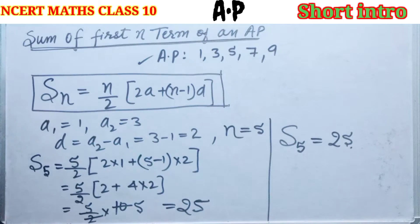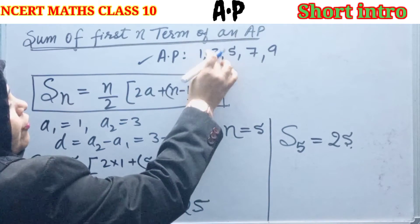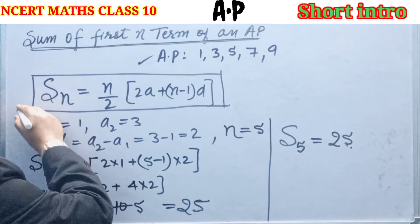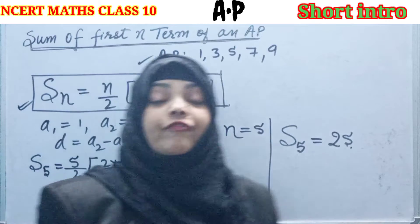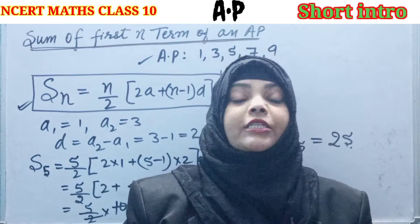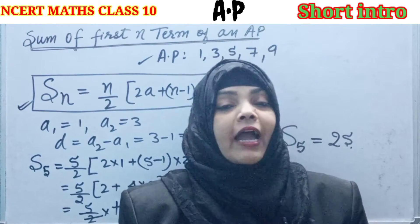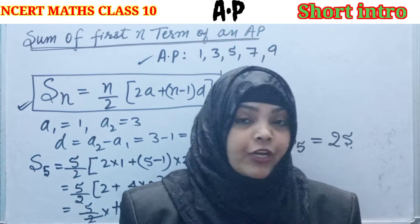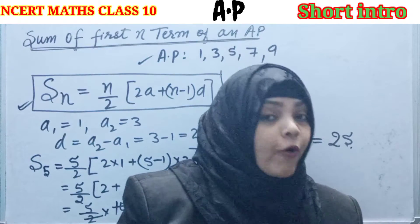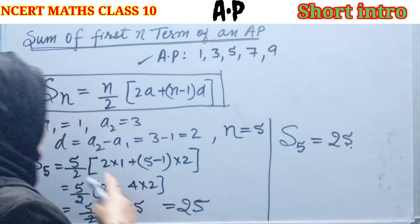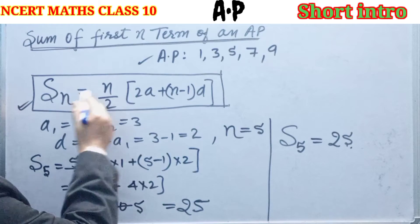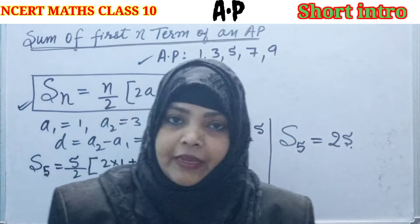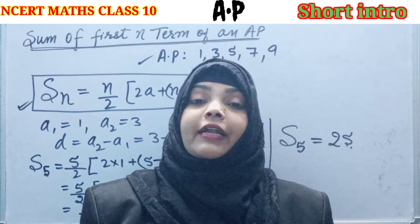Understood? Easy. We can also add 3 plus 1 is 4, 4 plus 5 is 9, 9 plus 9 is 18, 18 plus 7 is 25. But this is very important to know because if there are 100, 20, 50, 60 terms, then that becomes very difficult. For that, we have a formula. By using this formula, you can find the sum of the given first N terms of any AP.